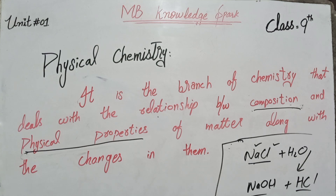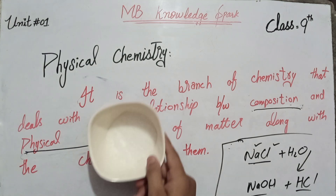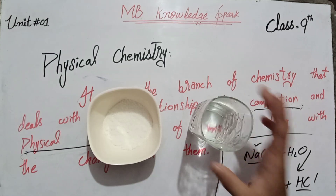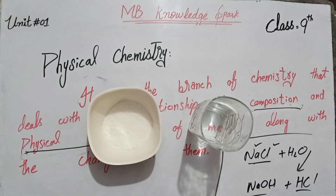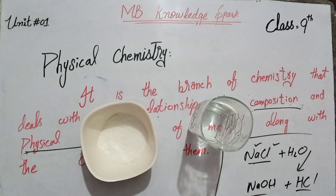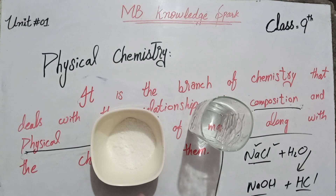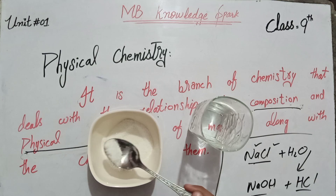Now I will give you a practical example. This is salt — NaCl — and this is a glass of water. When we apply this salt, it is in crystalline form and white in color.